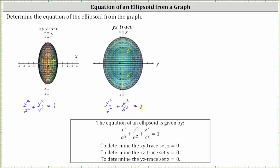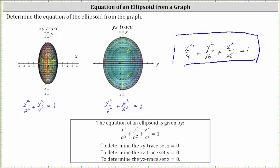Putting the pieces together, the equation of the ellipsoid is x-squared divided by two-squared, or x-squared divided by four, plus y-squared divided by four-squared, or y-squared divided by 16, plus z-squared divided by five-squared, or z-squared divided by 25, equals one. Notice that to find the x-y trace we set z equal to zero, and to find the y-z trace we set x equal to zero — confirming this is the equation for the three-dimensional ellipsoid. I hope you found this helpful.